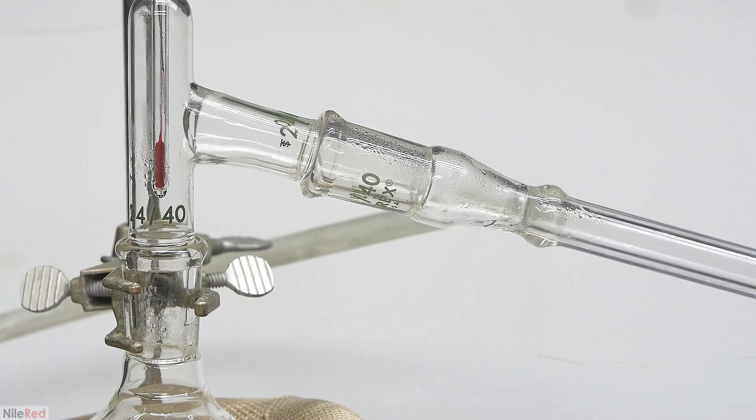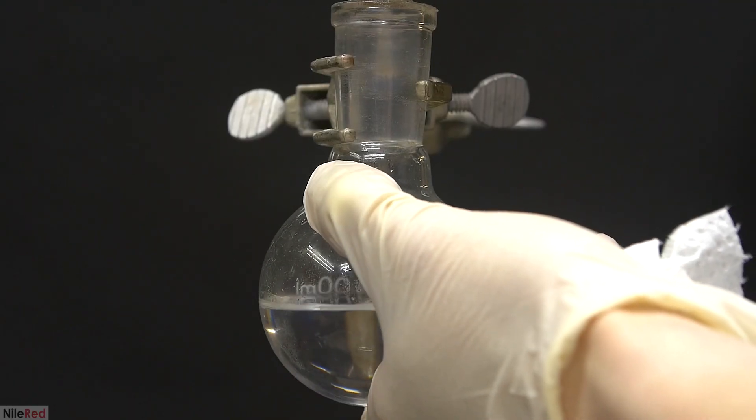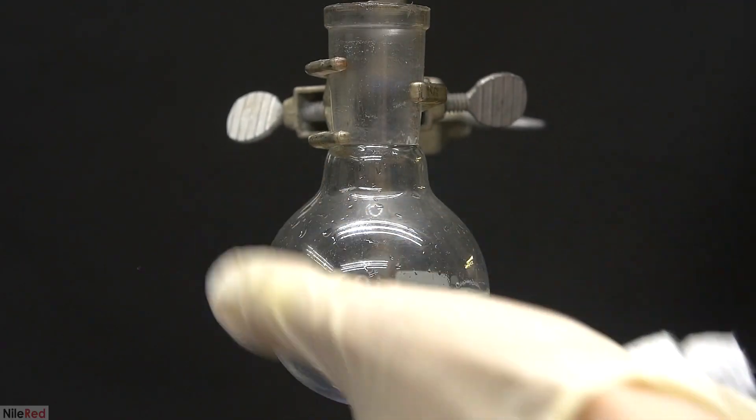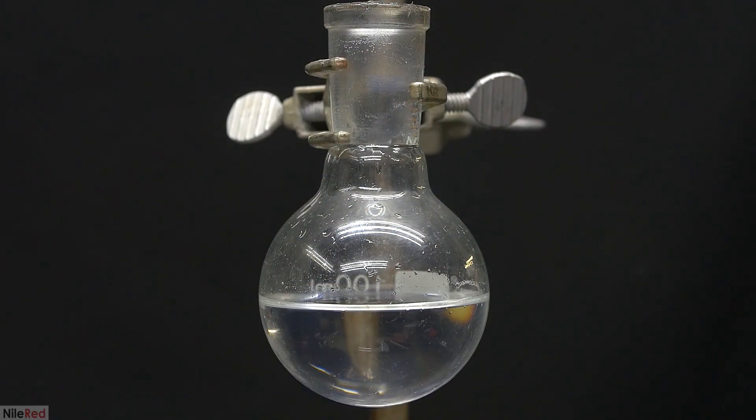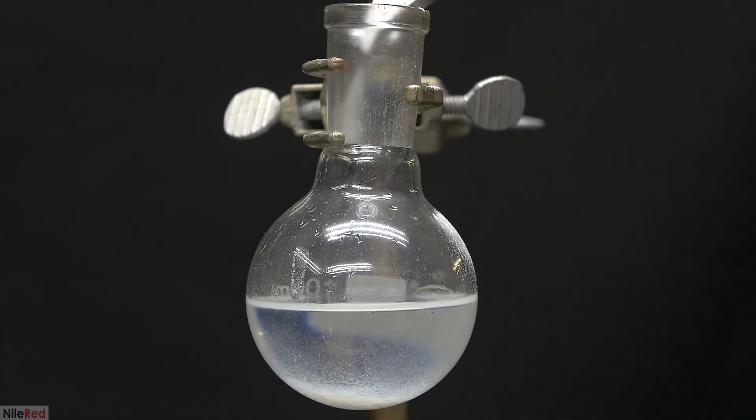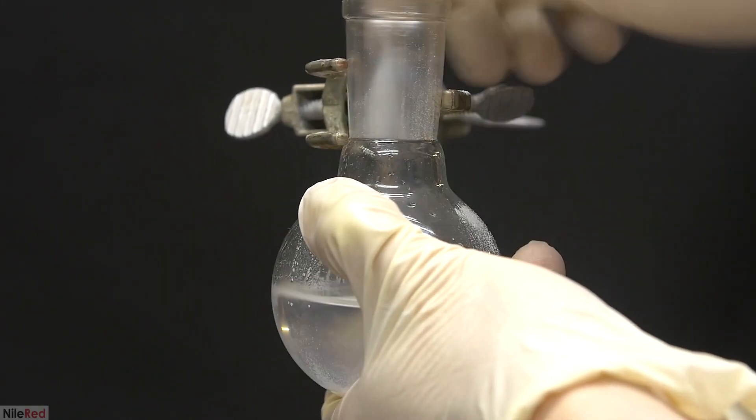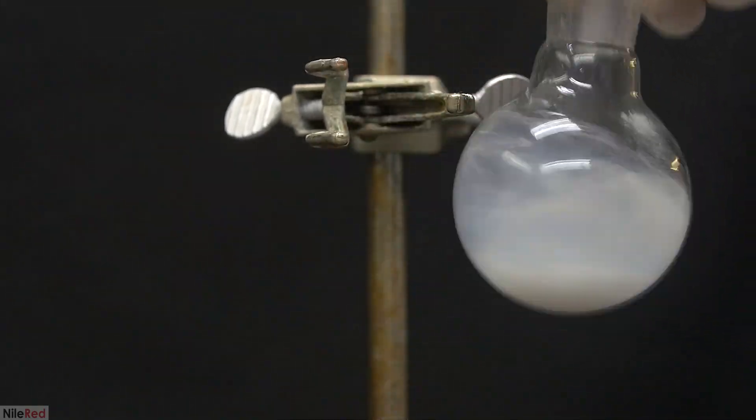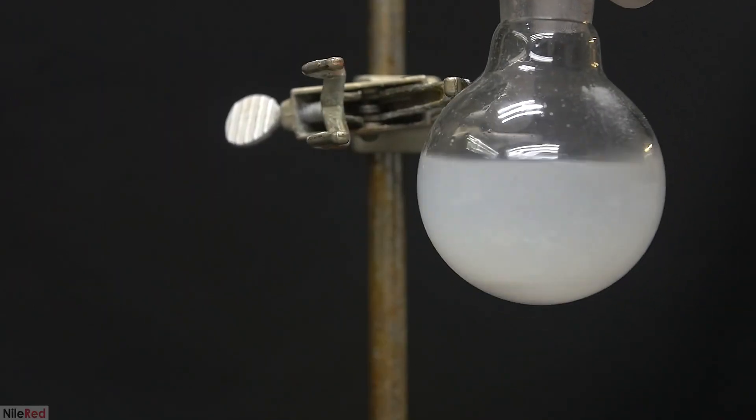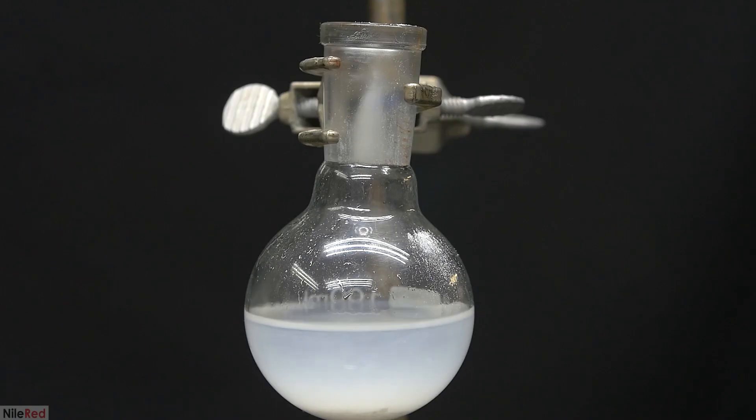The essential oil of bitter almonds is almost pure benzaldehyde. Depending on the source, the essential oil can sometimes be used directly in synthesis without any prior purification. To be safe though, it's always best to purify the oil and that's what I'll be doing in this video. This method saves a lot of time and doesn't cost too much.